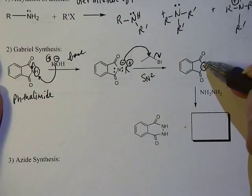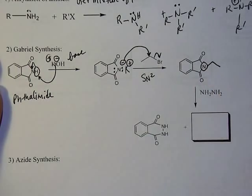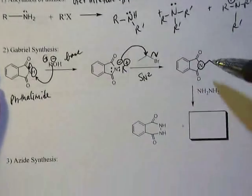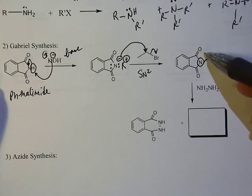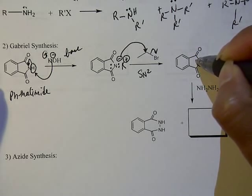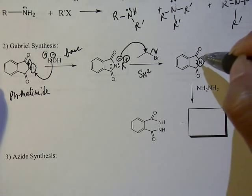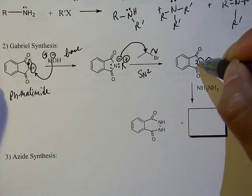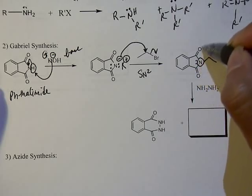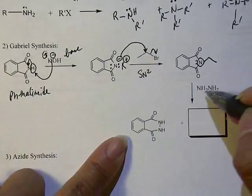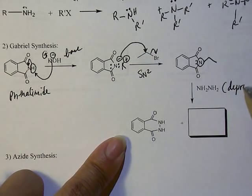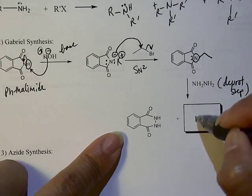Think of this big phthalimide unit as a source of nitrogen, and this whole thing is just a protecting group. The reason why this doesn't over-alkylate like it did before is because this is an imide—it's double-bonded oxygen on both sides—but its functional group is sort of like an amide in which the lone pair on the nitrogen is not available; it's resonance stabilized. This is pretty happy after it alkylates, and then this is the deprotecting step in releasing the phthalimide.